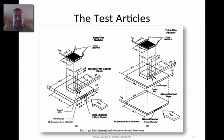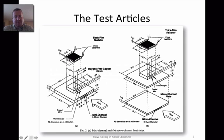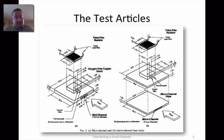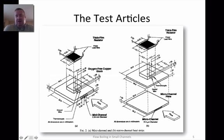The test articles were of two types. On the left we see a mini channel — three circular ports with flow going linearly through them from one end to the other, with sizes of about three millimeters. Then we had micro channels with about half a millimeter, or 500 micron, hydraulic diameters. Both the mini channel and the micro channel had a thick film resistor put on top as a power supply.